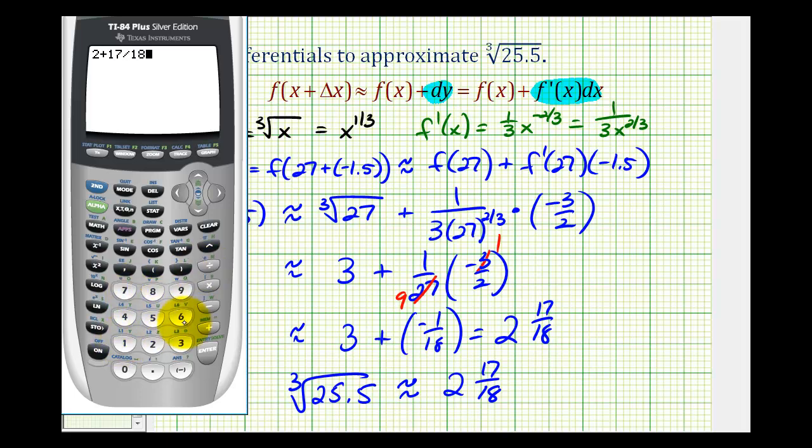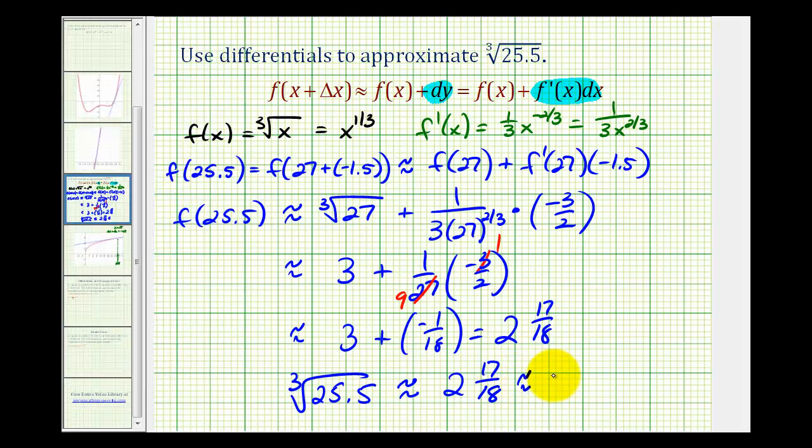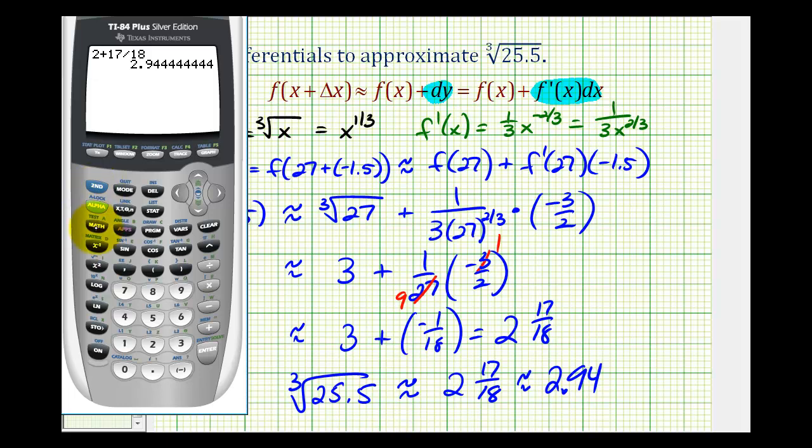So 2 plus 17/18 is approximately 2.94. Let's see what the calculator gives us for the cube root of 25.5. Press math and then option 4.